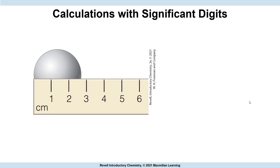Now we're going to go a little bit further. We're going to say we collect data and do some calculations with that data. How many digits can we express in our answer? It's actually important because you only want to express uncertainty in your last digit, and that's why we write a certain number of significant digits.